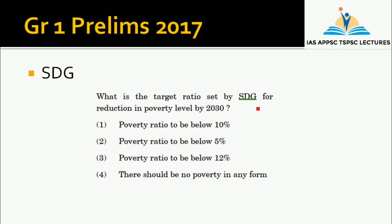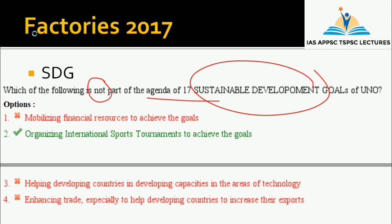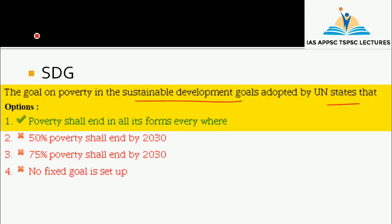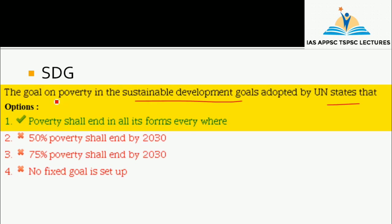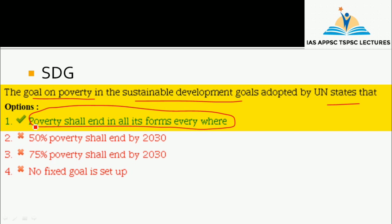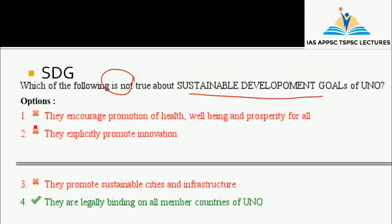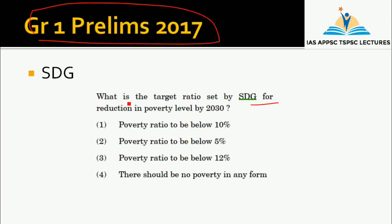What is the target ratio by SDG for reduction in poverty level by 2030? This is a Group 1 Prelims question. The goal on poverty in Sustainable Development Goals adopted by the United Nations states that poverty shall end in all its forms everywhere. This is one type of question — the common thing is the SDG poverty target by 2030.